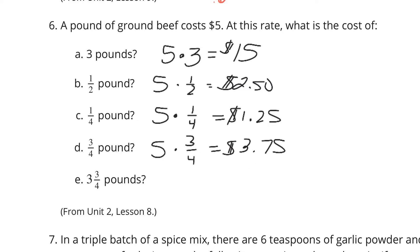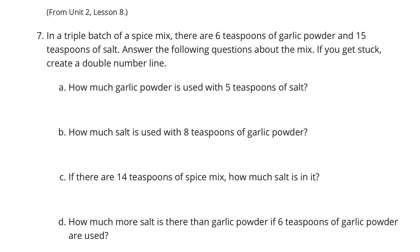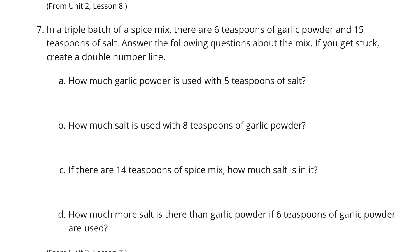Now, likewise, if I had 3 and 3 fourths, well, I have 3 and 3 fourths here. And so I can just add those up to get $18.75 for 3 and 3 fourths pounds. Question seven. I've got a triple batch of spice mix. There are six teaspoons of garlic powder and 15 teaspoons of salt. Answer the following questions about the mix. If you get stuck, consider using a double number line.